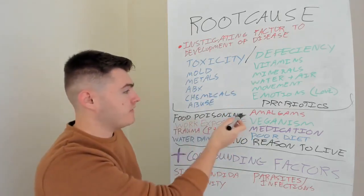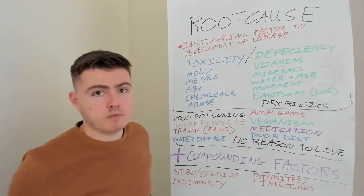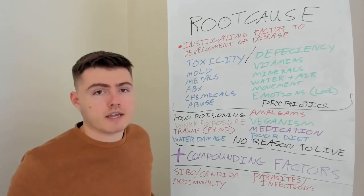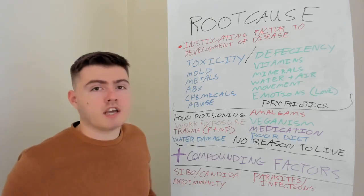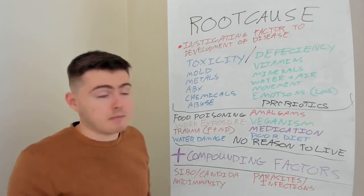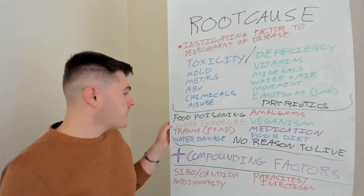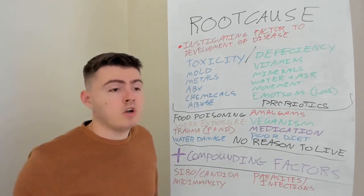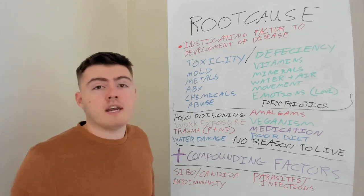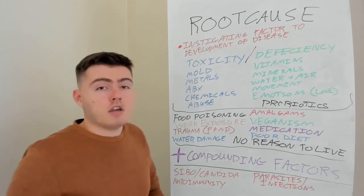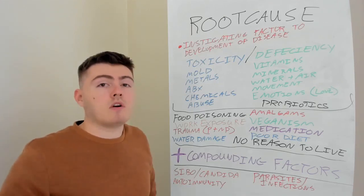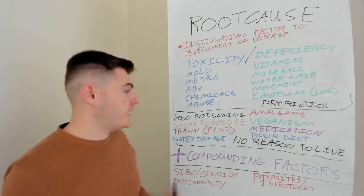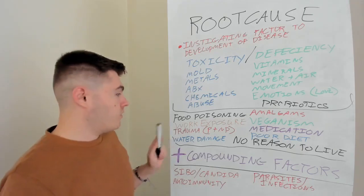So we've got food poisoning events — somebody gets food poisoning, they've got an imbalanced microflora, and this sets them up for post-infectious IBS or something like that. That can be a root cause. We've got work exposure — if you work in a hair salon, as a chemical engineer, in a mine, or on an oil rig, you can be exposed to various chemicals. That can be a root cause.